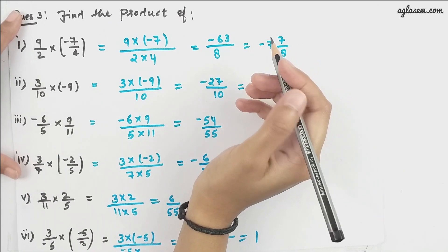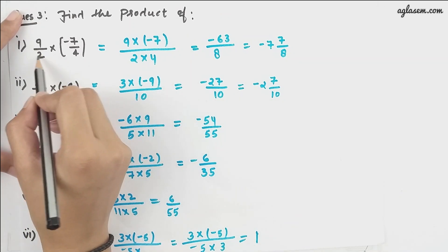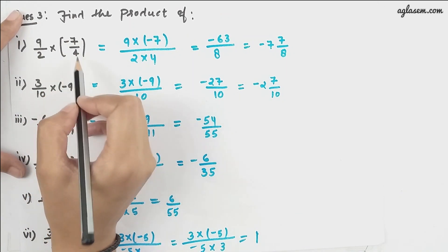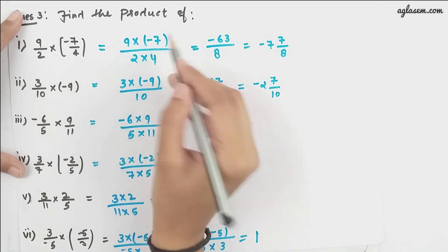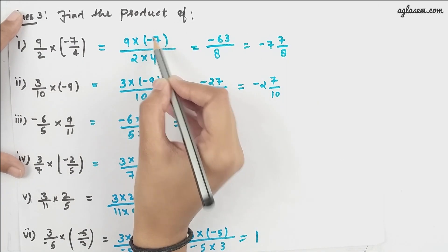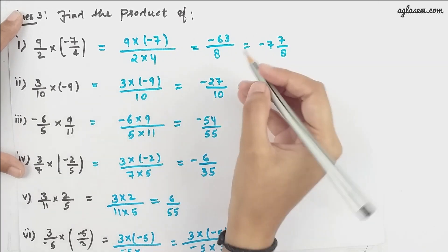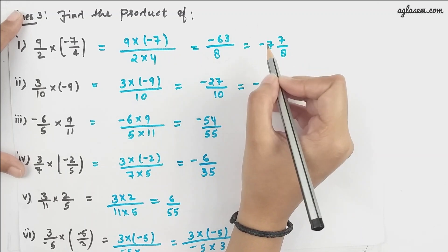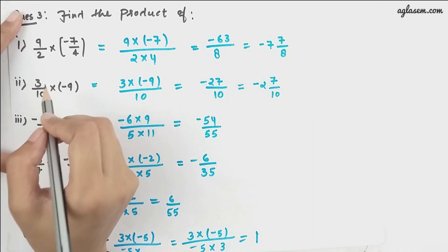Moving to the next question: find the product. The first is 9/2 × (-7/4). That is very simple — multiply 9 × 7 = 63, and the sign is negative. Then 2 × 4 = 8, giving us -63/8. Converting to a mixed fraction, that is -7⅞.